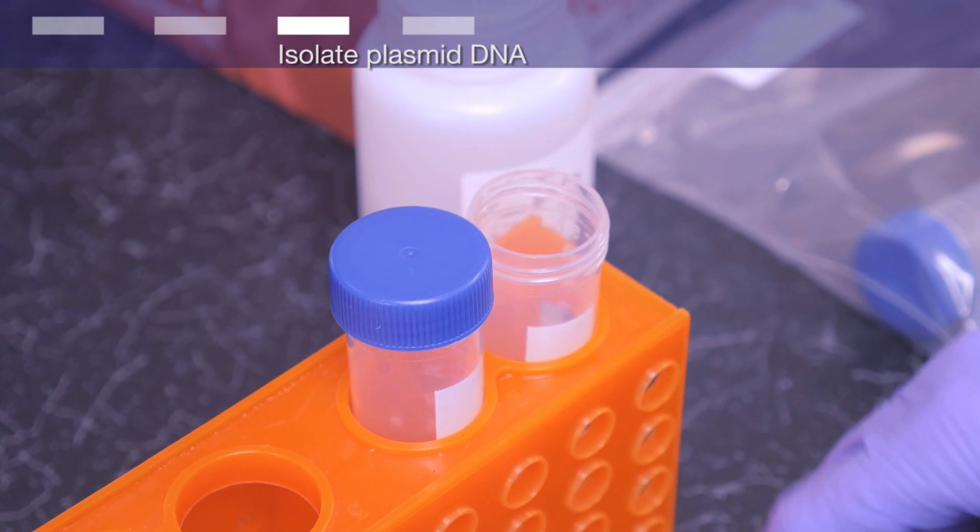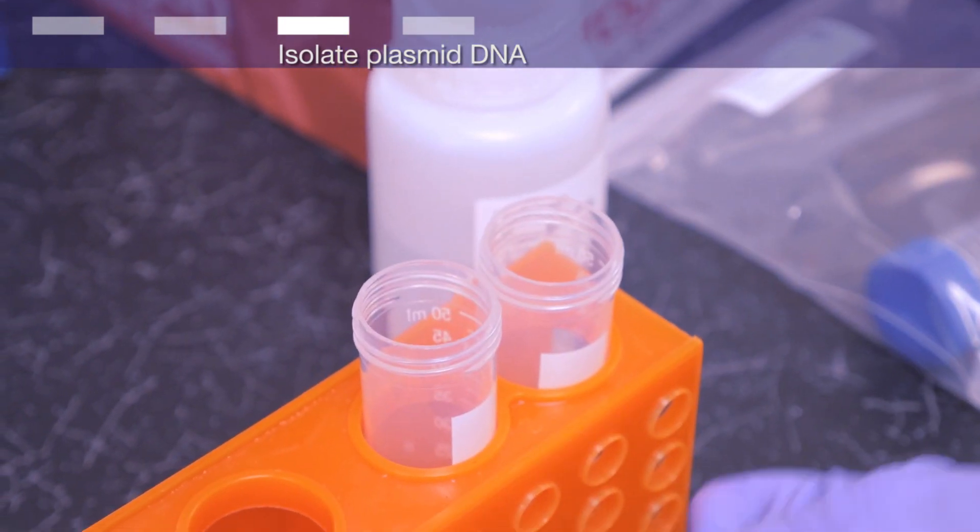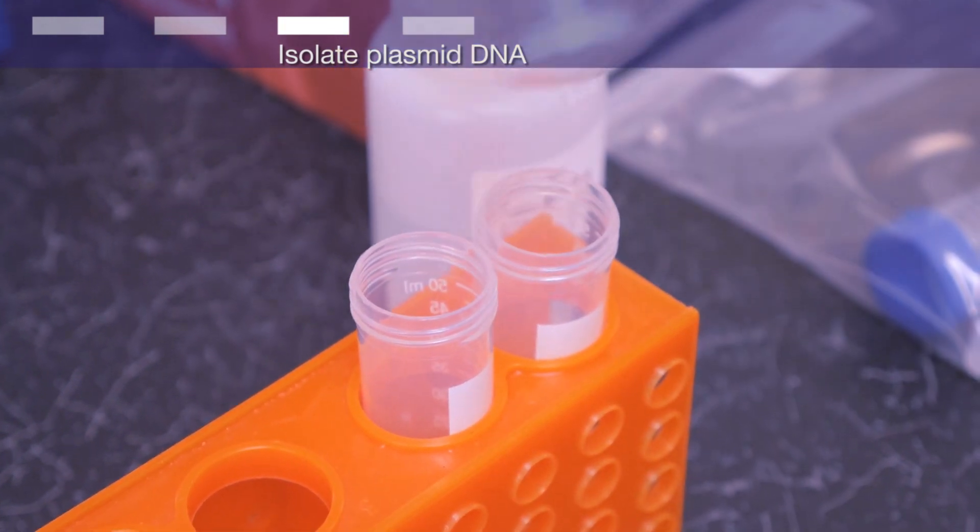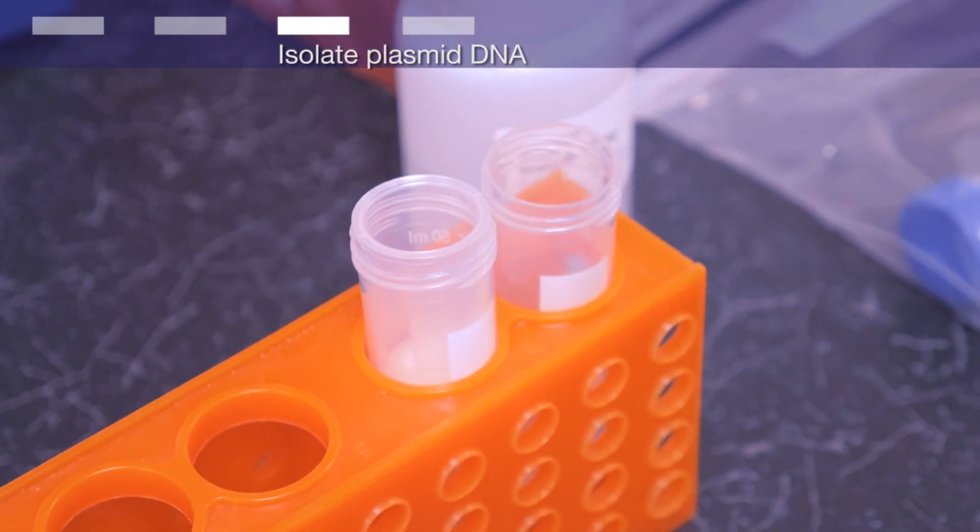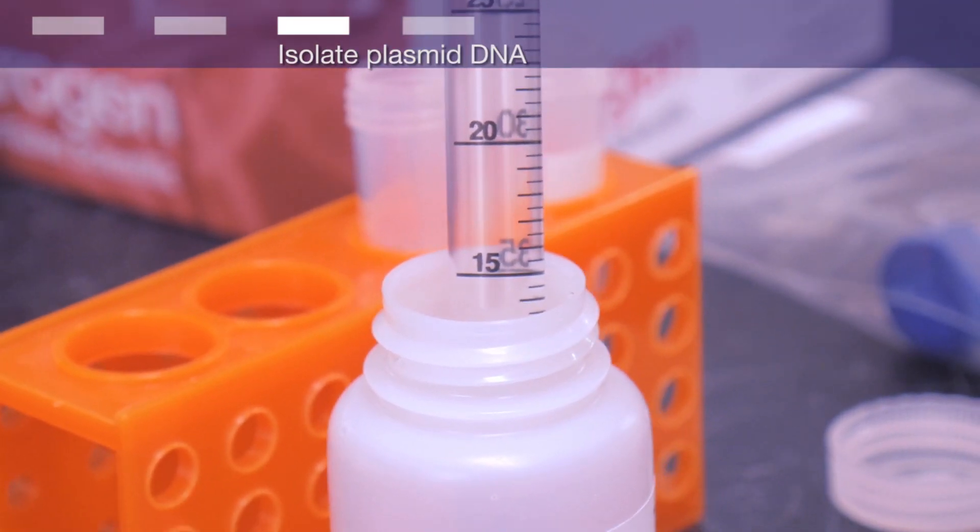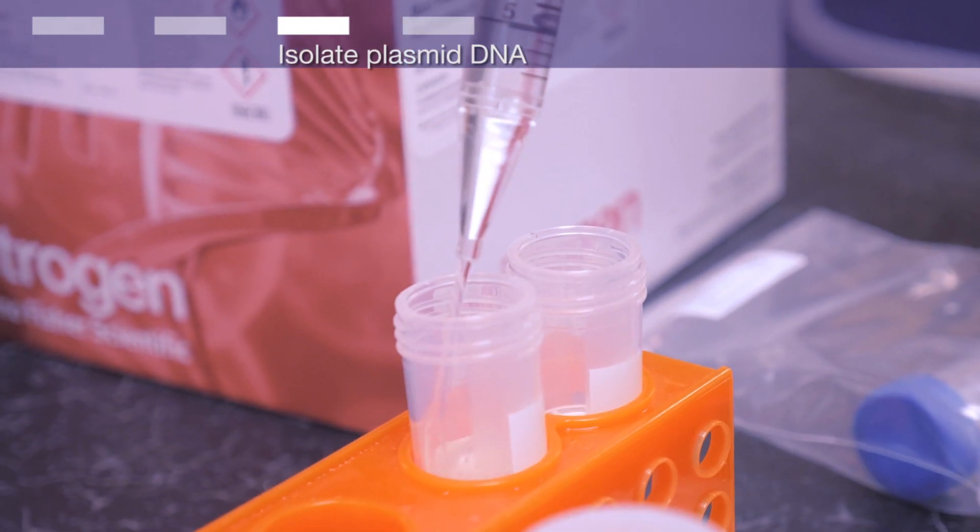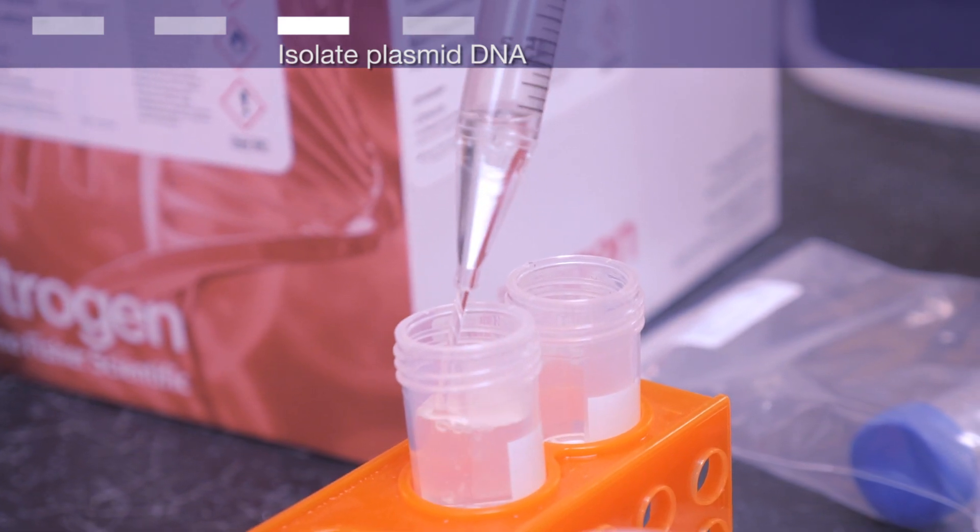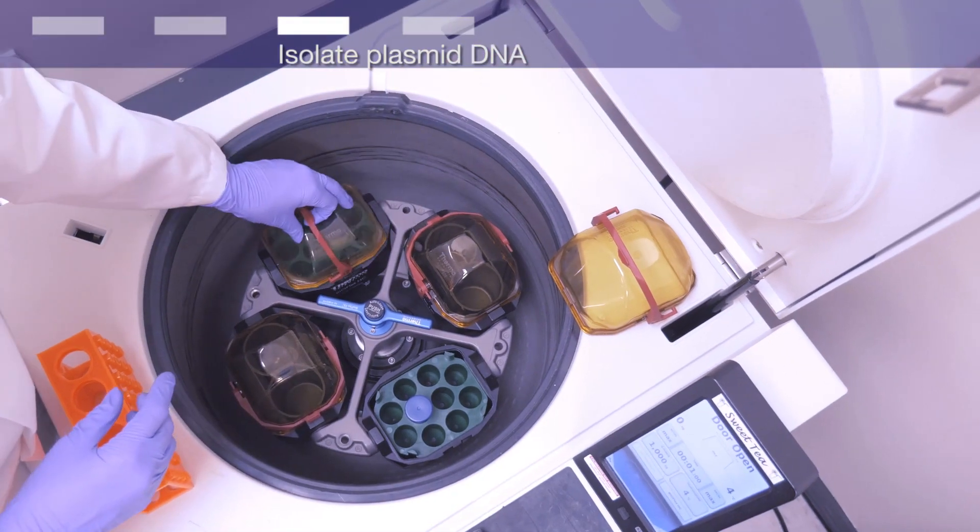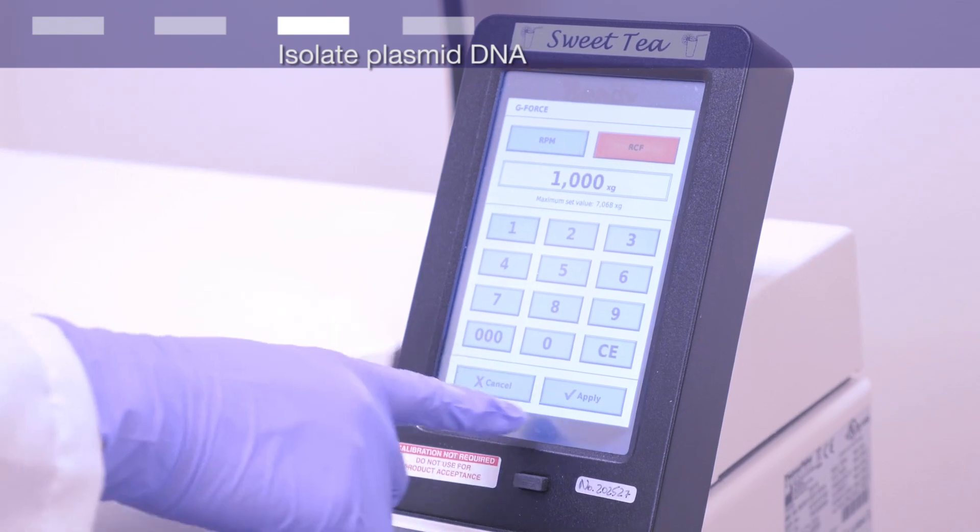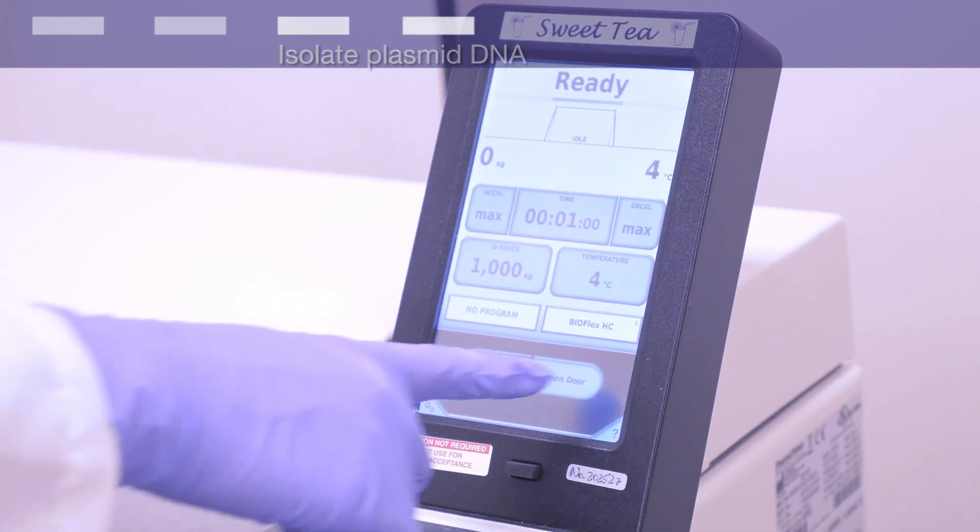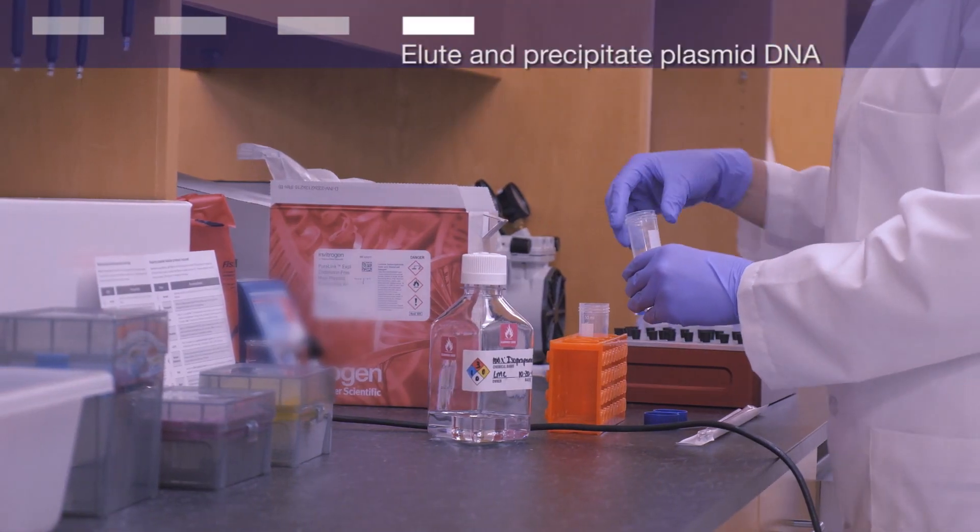To elute plasmid DNA, place the DNA binding column into an endotoxin-free 50 milliliter conical tube with a blue cap. Add 15 milliliters of elution buffer to the column and incubate for 1 minute. Centrifuge at 1000 times G for 1 minute. Remove and discard the column. Your plasmid DNA is in the eluate.